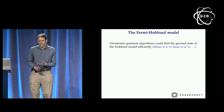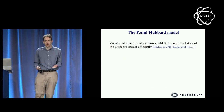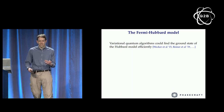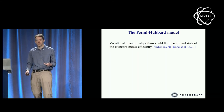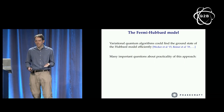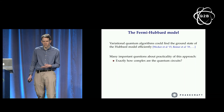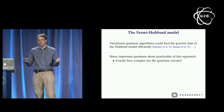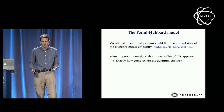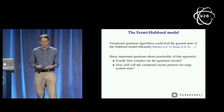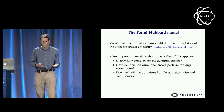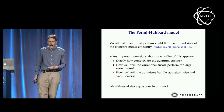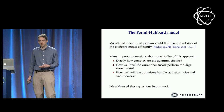One interesting approach to solving this on a quantum computer is a variational approach — in particular the algorithm known as VQE, Variational Quantum Eigensolver. This might be able to find the ground state of the Hubbard model efficiently. But there are open questions about the practicality of this approach for near-term devices: how complicated are the quantum circuits needed? Are they too deep for near-term devices? How well will the variational algorithm perform for large system sizes? How well will optimizers handle circuit errors and statistical noise in the optimization? We were trying to address these questions in our work.